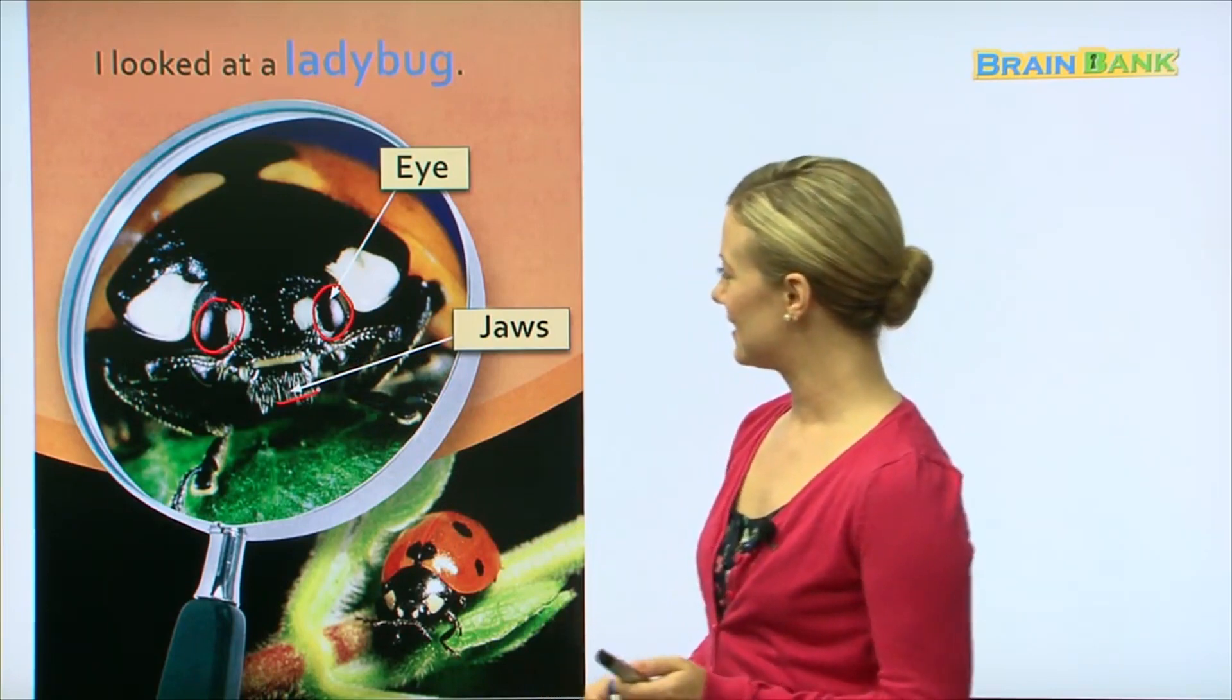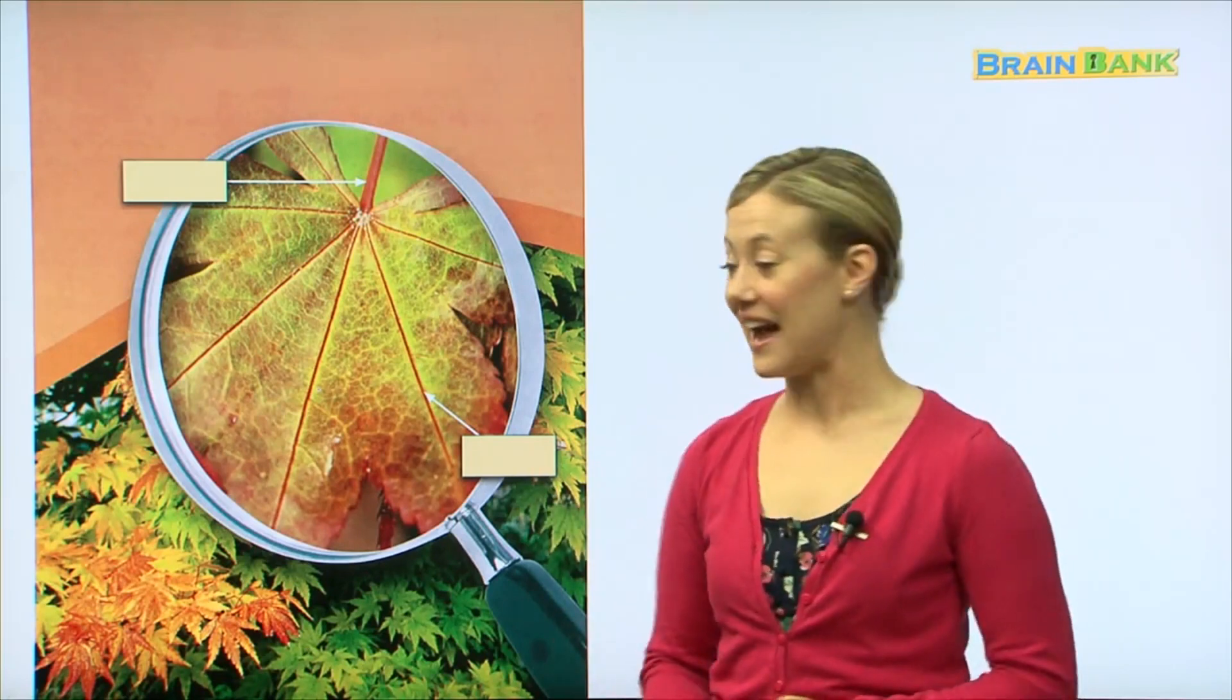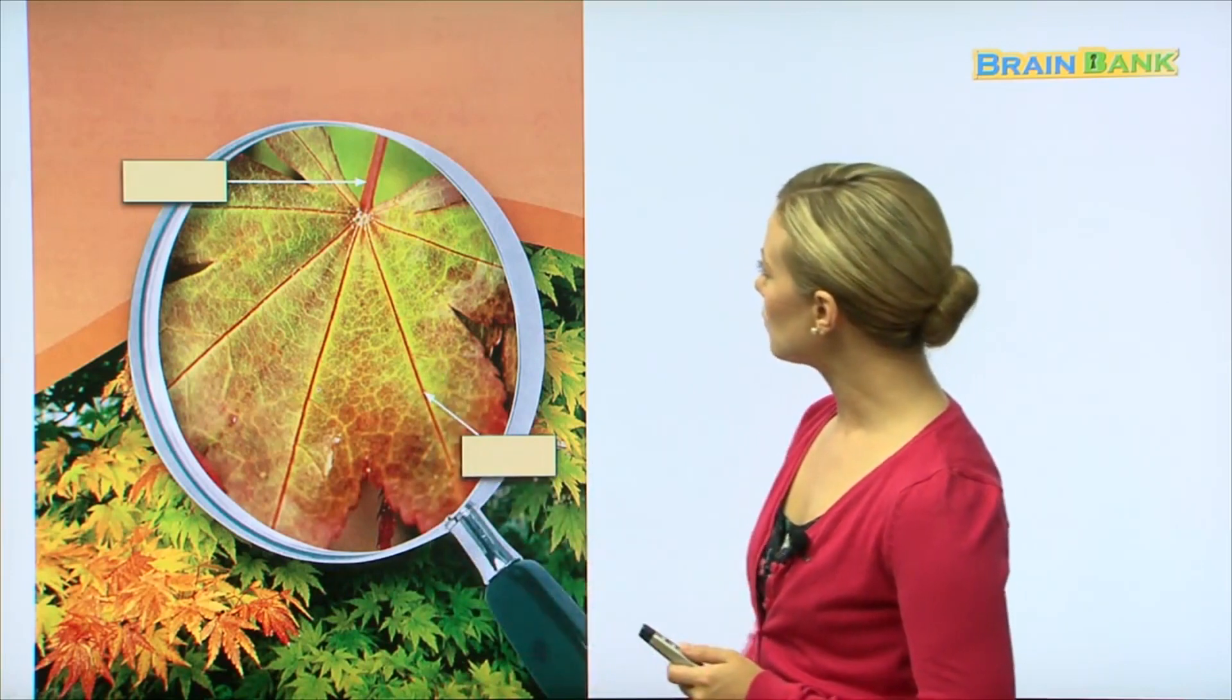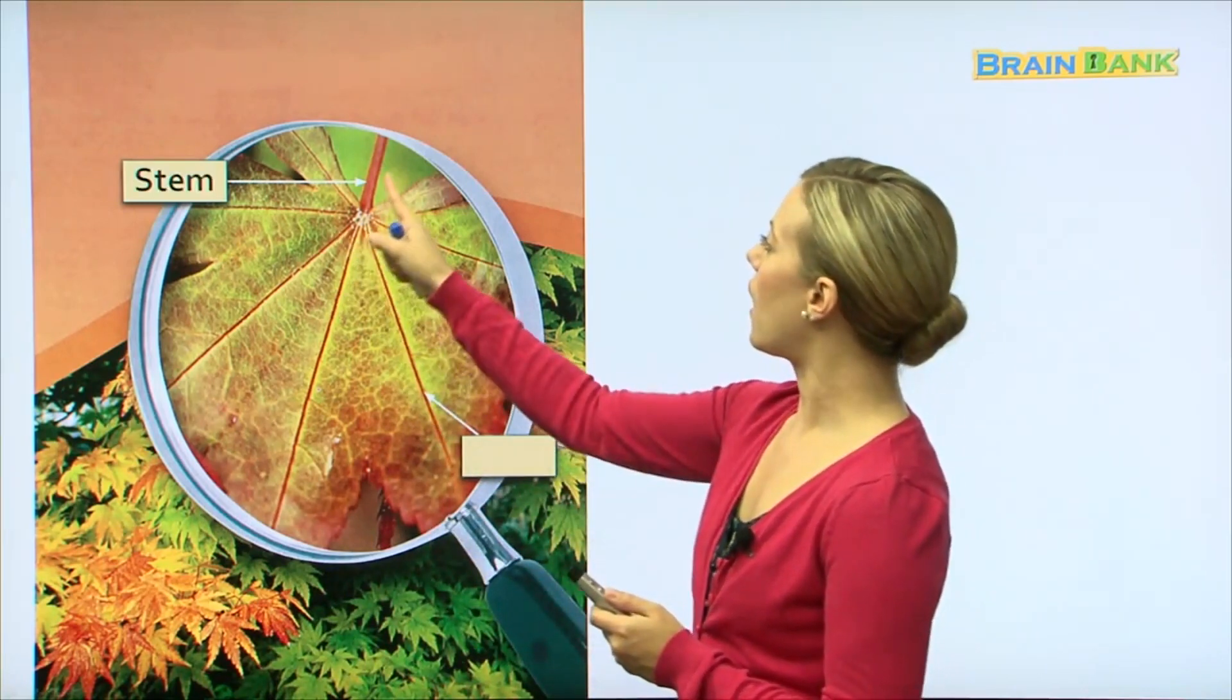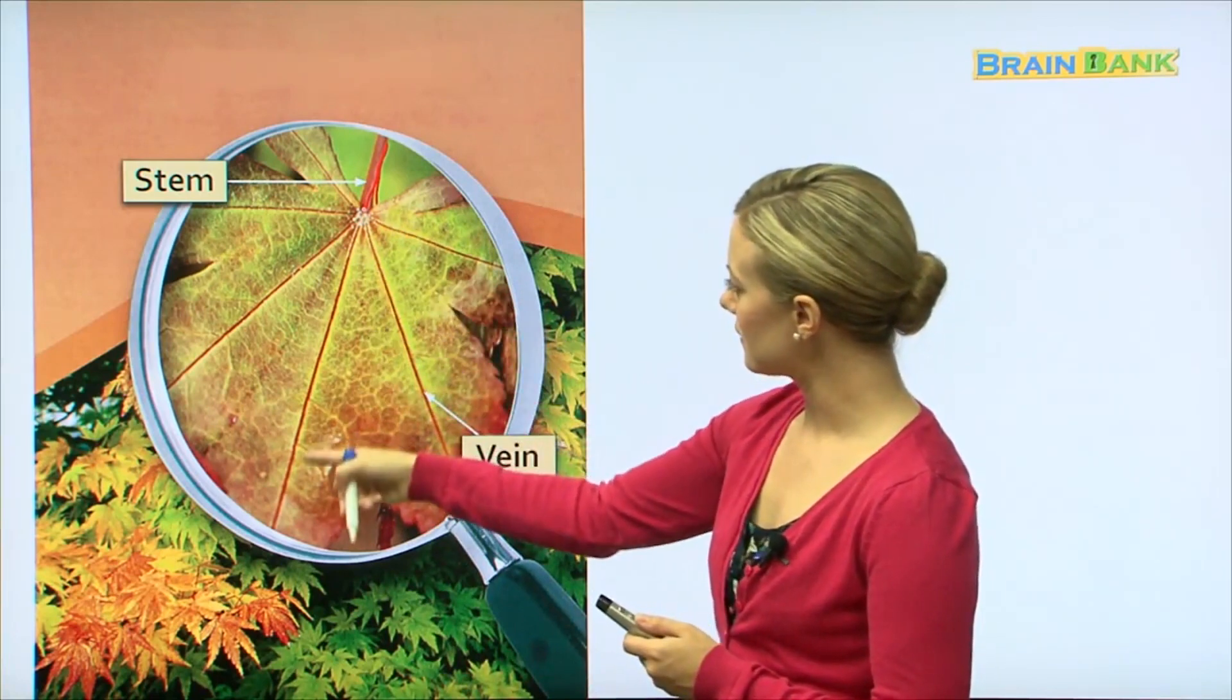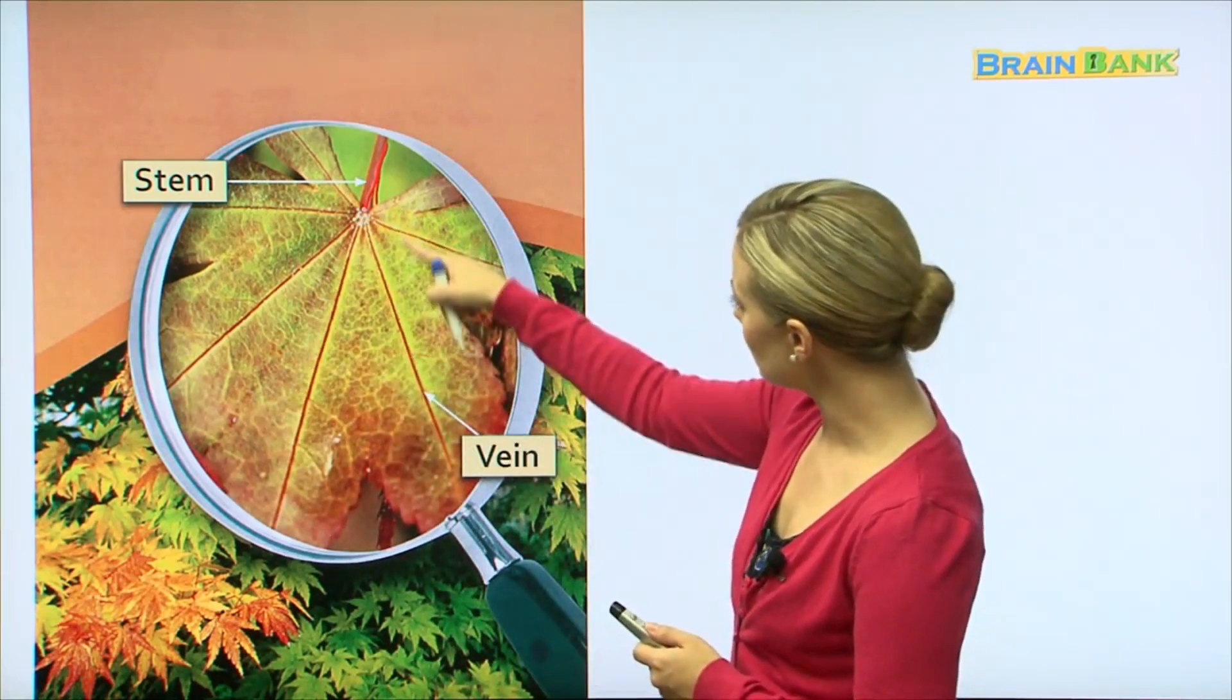Oh wow, so this is not an insect. We are looking at something else now. Does anyone know what these are? Yes, these are leaves, leaves from a tree. So let's see when we look up close. We have the stem and the vein. Interesting - I didn't know that leaves have these veins. Did you?